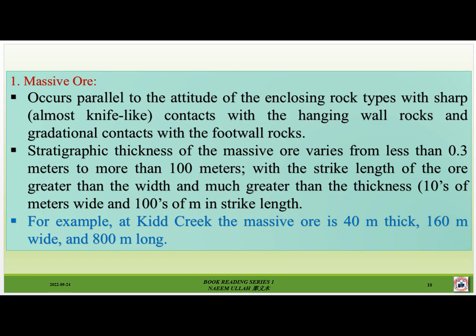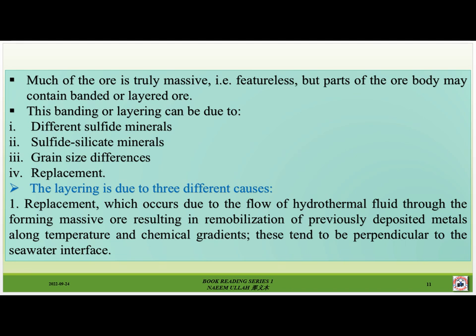Massive ore occurs parallel to the attitude of the enclosing rock types, with sharp almost knife-like contacts with the hanging wall rocks and gradational contacts with the footwall rocks. Stratigraphic thickness of the massive ore varies from less than 0.3 meters to more than 100 meters, with strike length greater than the width and much greater than the thickness. For example, at Kidd Creek the massive ore is 40 meters thick, 160 meters wide, and 800 meters long. Much of the ore is truly massive — that is, featureless — but parts of the ore body may contain banded or layered ore.